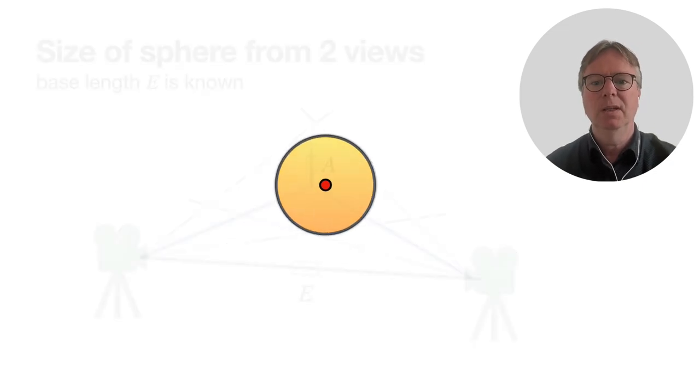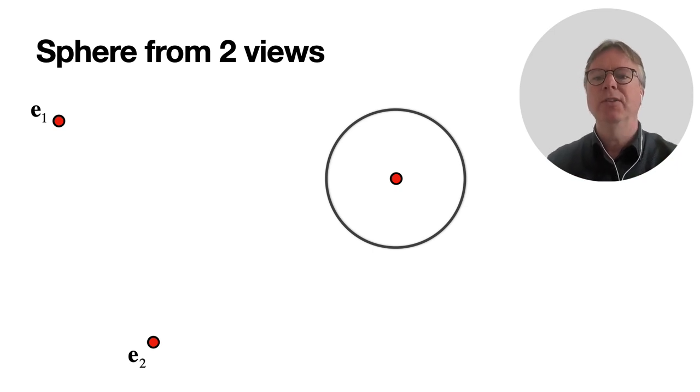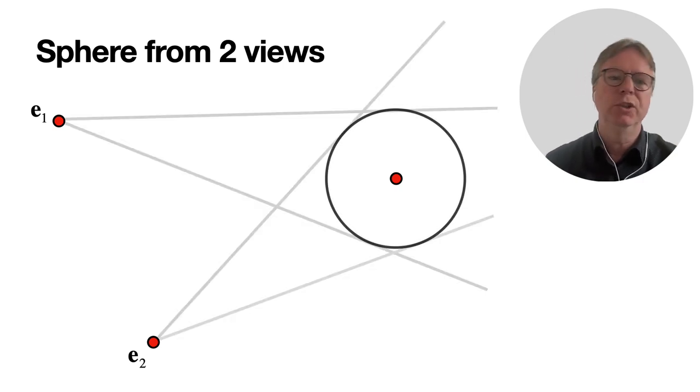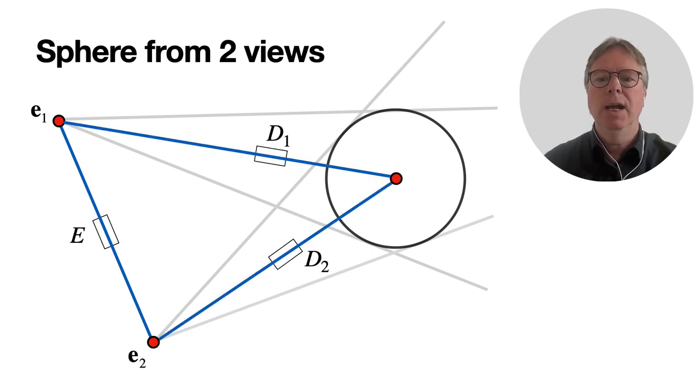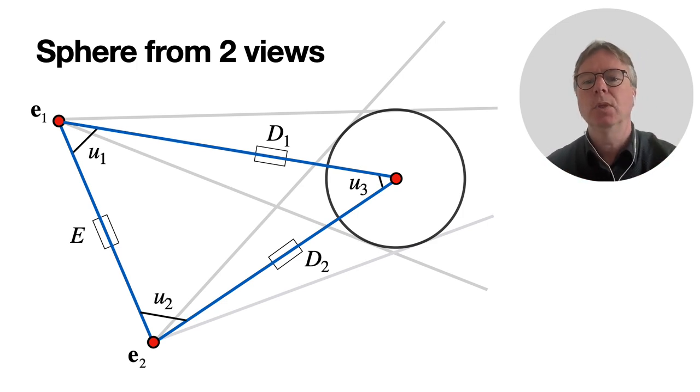Let's get started with some simple math. Here are two points, those are the viewpoints, and a sphere with a center. These are the two visual cones from the two eyes or cameras. The base length is E quadrants. We also have two distances from the viewpoints to the center of the sphere, d1 and d2. We also have spreads: u1 is the spread between the direction from viewpoint 1 and the baseline, u2 is the spread between the baseline and the other view direction, and u3 is the spread between the two viewing directions.